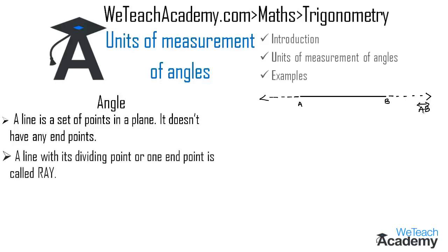Coming to the ray: a line with one endpoint is called a ray. Here this is a line, and the endpoint makes it a ray which can be extended from only one side. We name this ray as CD, represented as ray CD. A line segment AB has two endpoints and is written as line segment AB.